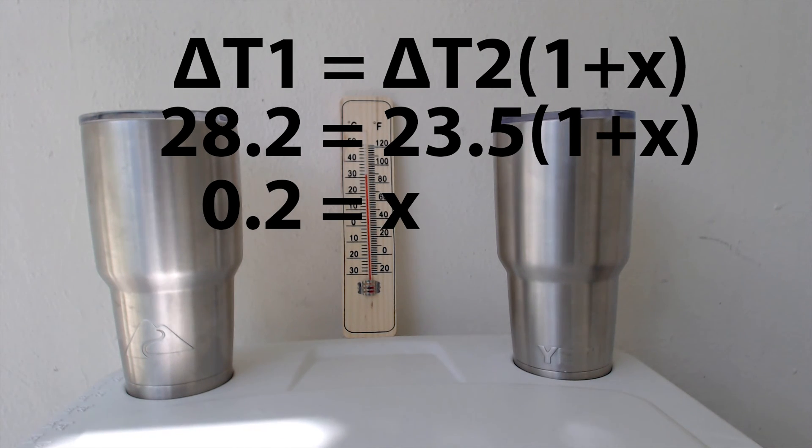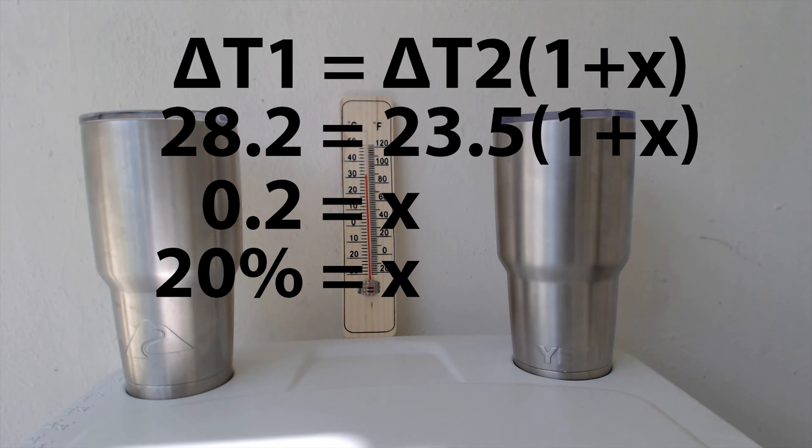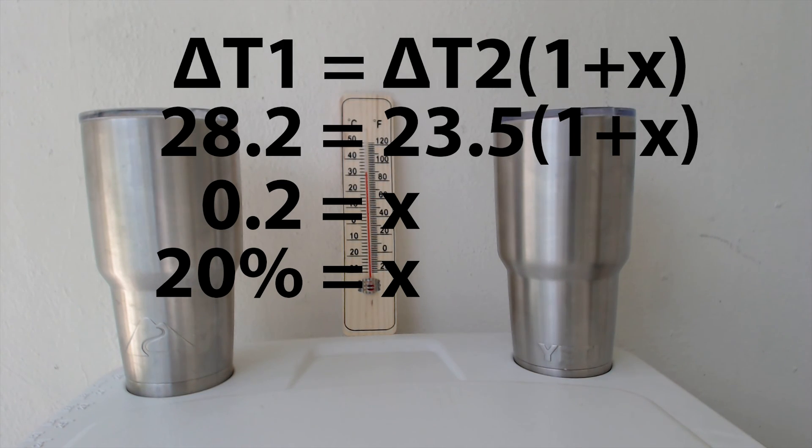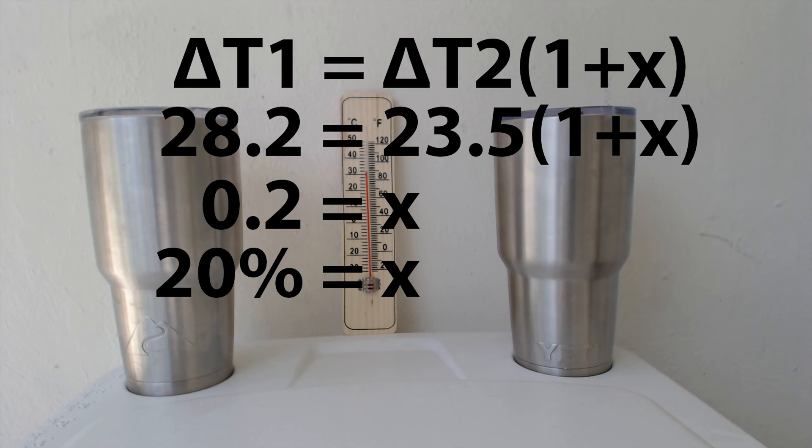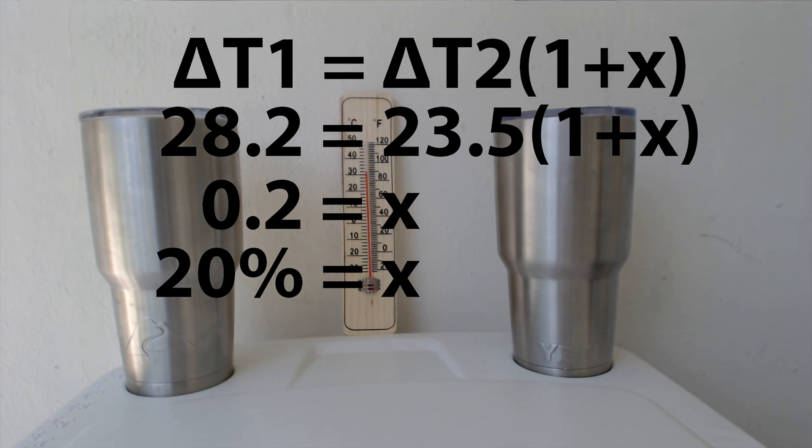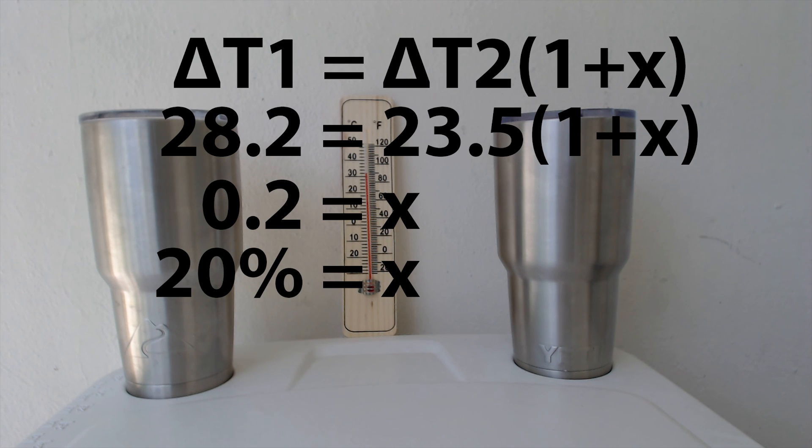When you solve for x, you get 0.2, and essentially that translates to a 20% higher efficiency, which is kind of surprising. The Ozark Trail, being about a $10 tumbler, was 20% more efficient in insulating the solution inside than was the $40 Yeti tumbler. It may be important to note here that the Ozark Trail tumbler started at 21.6 degrees Fahrenheit and the Yeti started at 19.1 degrees Fahrenheit. You can see the change in the two temperatures there. I'd be interested to see any other results of anybody else doing any tests like this. These results are pretty surprising to me.